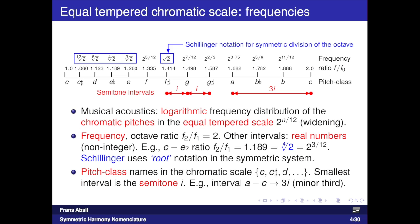The introduction of equal temperament in the 18th century implied the definition of the semitone interval in the frequency domain. The semitone interval between two pitches means that their frequency ratio is 2 to the power 1/12. As we move from lower pitches to higher pitches, the actual frequency differences increase, whereas the ratios between neighboring pitches remain constant. The tick marks on the line indicate the frequency ratios of the chromatic pitch class units, which can also be written as root numbers of 2.